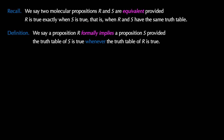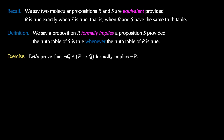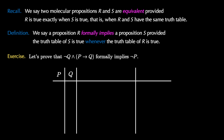Let's show that not Q and P implies Q formally implies the proposition not P. Once again, we fill in a truth table with one column for P, one column for Q, and four rows for the truth values that P and Q can take on. The third column is for not Q and P implies Q, and the last column is for not P.